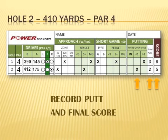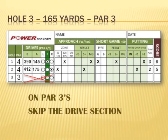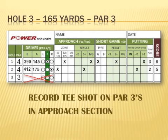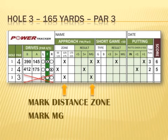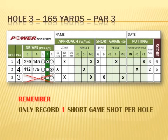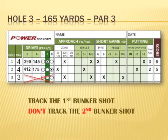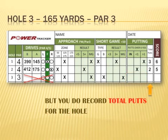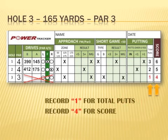Now let's track one more hole. Hole 3 is a 165-yard par 3, so you skip the drive section — tee shots on par 3s are recorded in the approach section. We hit the 165-yard tee shot into the bunker, mark the distance zone, and mark MG for missed green. Our first bunker shot doesn't get out, so we record it as a missed green. We hit the second bunker shot onto the green about 2 yards away, but remember you only record one short game shot per hole, so you record the first bunker shot but not the second. The first putt is less than 6 yards, so you do not record its result in the performance section, but you do still record the total number of putts. You make the putt for a final score of 4.